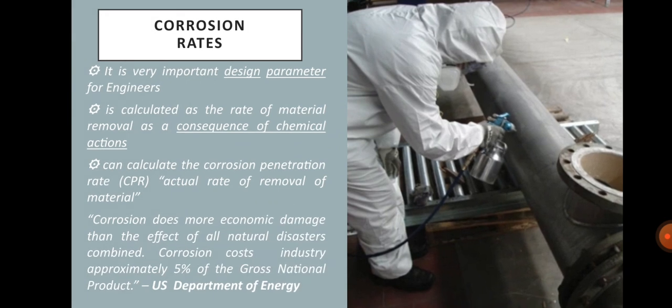Corrosion rates are a very important design parameter for engineers because corrosion can destroy process piping and damage equipment if not accounted for properly. The corrosion rate is calculated as the rate of material removal as a consequence of chemical reaction. We can calculate the corrosion penetration rate or CPR, which is the actual rate of removal of material. If corrosion is not calculated correctly, major processes can be completely shut down, causing a company to incur significant cost.